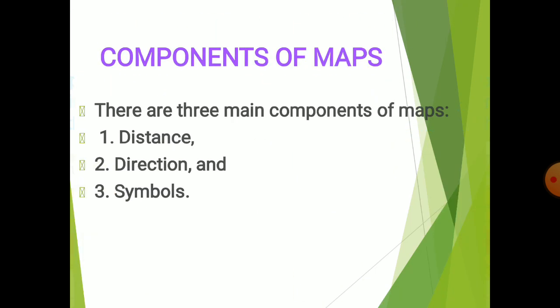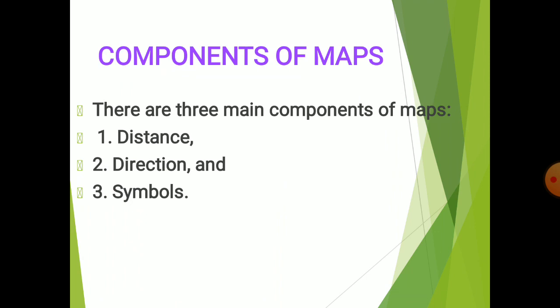Now let's discuss the components of a map. There are three main components of maps. First is distance, which is the most difficult and important component. Second comes direction, and finally symbols. Let's talk about these components in detail.